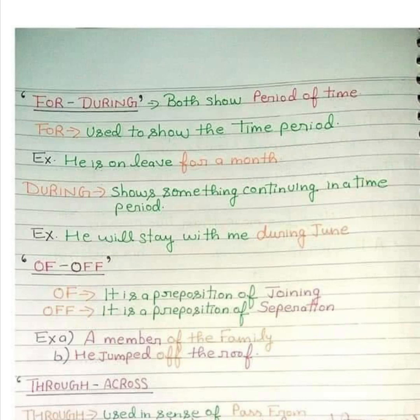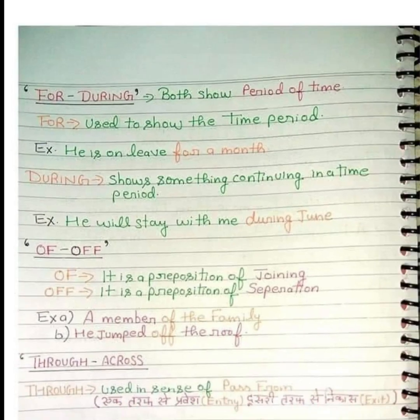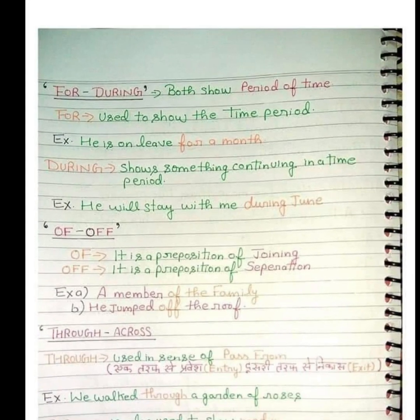'Of' is a preposition of joining — it shows belonging. But 'off' indicates accidental separation. For example: a member of the family — the person belongs to the family. But: he jumped off the roof — he suddenly separated from the roof accidentally. I am a member of this family — we use 'of,' not 'off.'